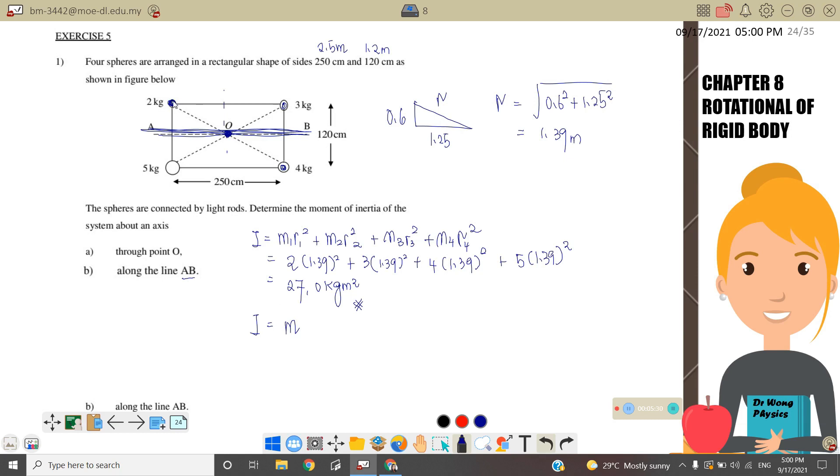Our I equals: M1 is 2 kg, R is 0.6, so 2 times 0.6 square plus M2 is 3 kg times 0.6 square plus 4 kg times 0.6 square plus 5 kg times 0.6 square. Therefore, I along line AB equals 5.04 kg meter square.